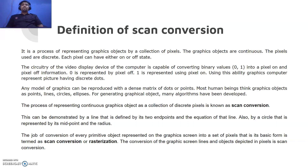In black and white movies, each pixel could only hold two types of colors: black or white. The black color represents the off state and the white color represents the on state. Since the pixel holds two values, they can be represented with binary values — 0 and 1 — where 0 means the off state and 1 means the on state.